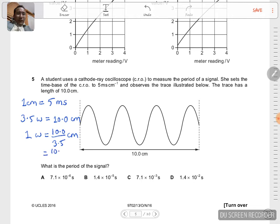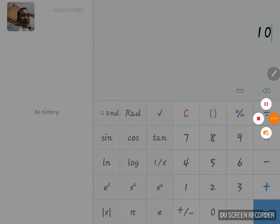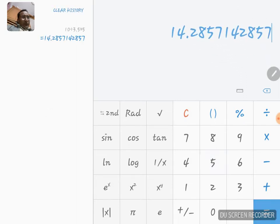That will be equal to... let us calculate. It should be ten divided by three point five into five, equal to 14.28 or let us say 14.3 milliseconds.